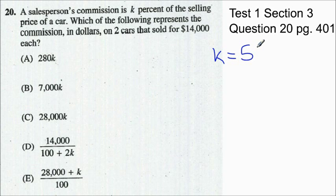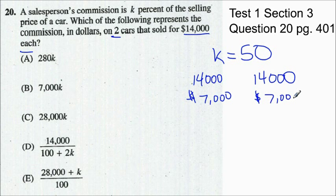So I'm going to say a salesperson's commission is k percent of the selling price of the car. So I'm going to say that k equals 50. So a salesperson's commission is 50% of the selling price of a car. So which of the following represents the commission in dollars on 2 cars that sold for $14,000 each? Well if they sold for $14,000 each I had this car that sold for $14,000 and I had this car that sold for $14,000. And I know that my commission based on what I chose here is 50% of the selling price of the car. So on this car I made 50% which is half. So I made $7,000. And on this car I made 50% which would be $7,000.